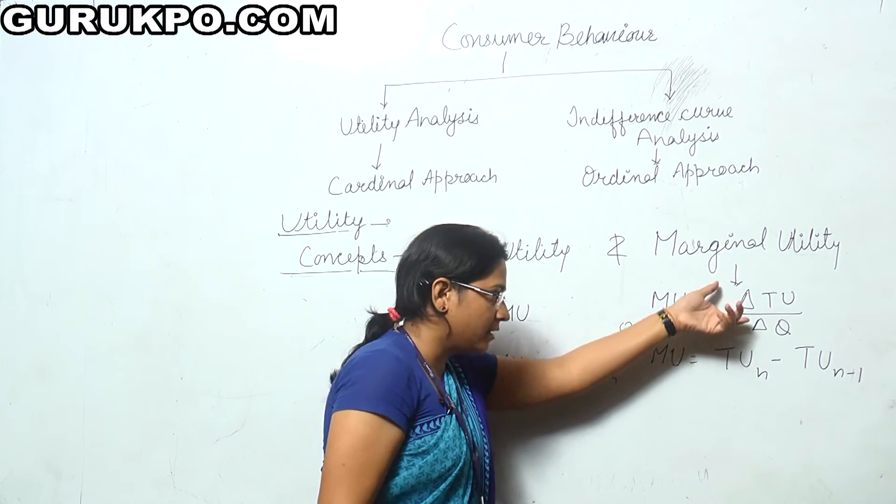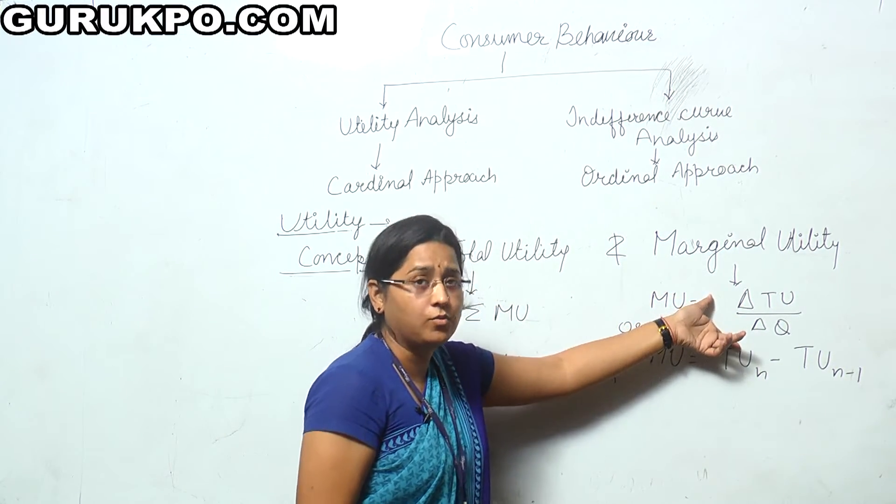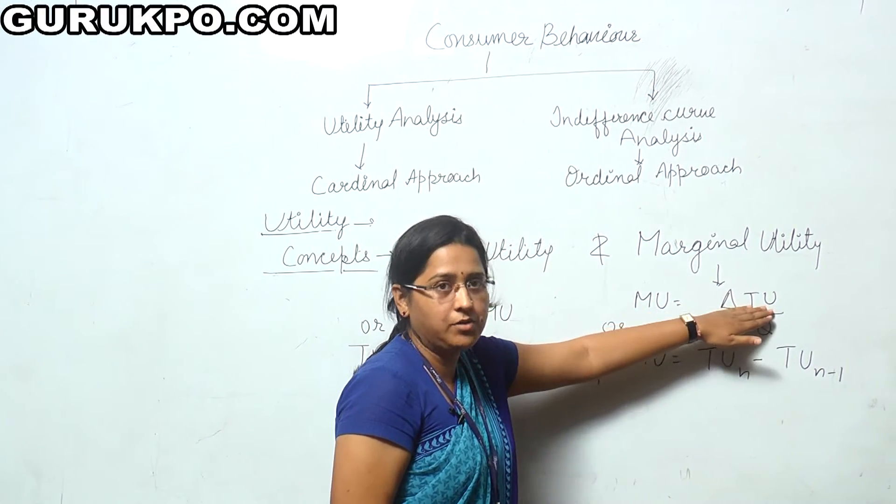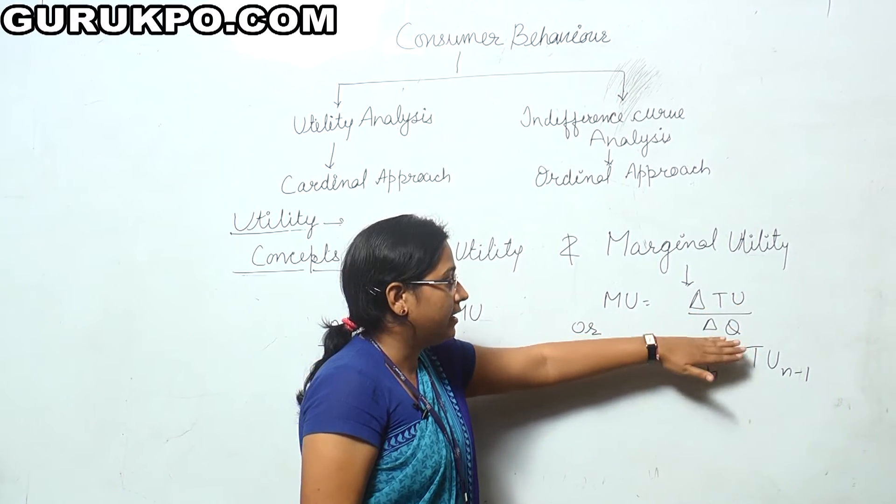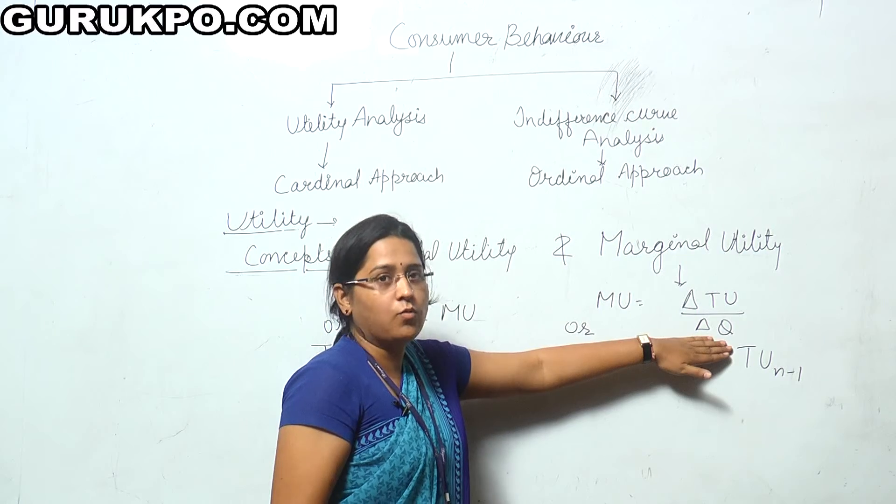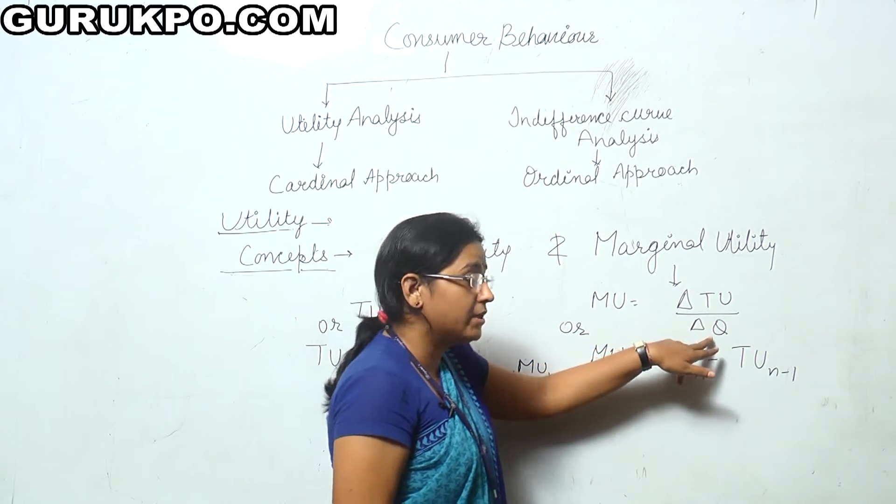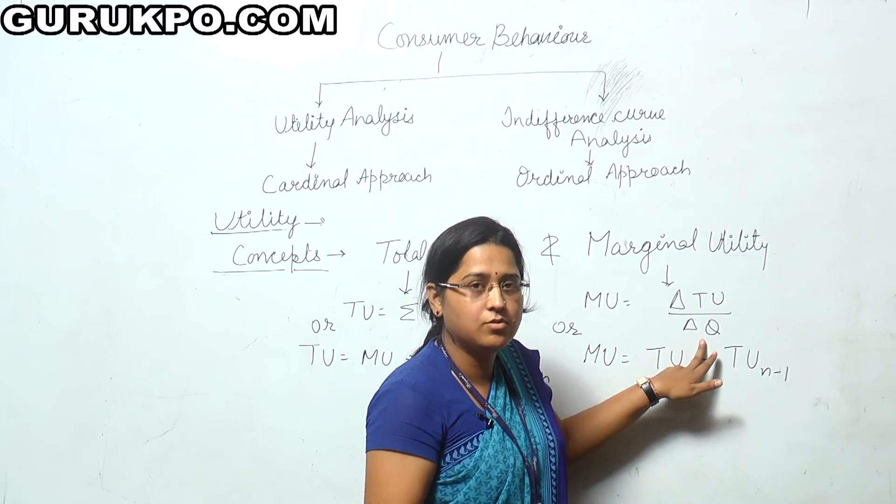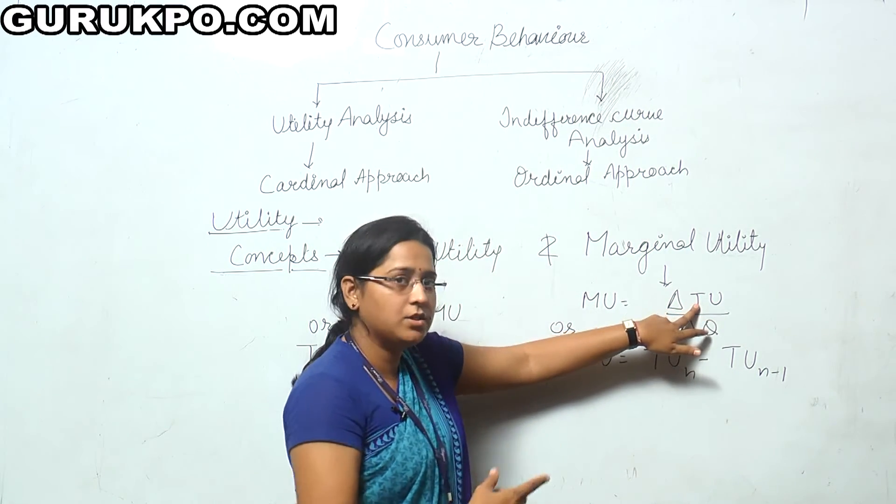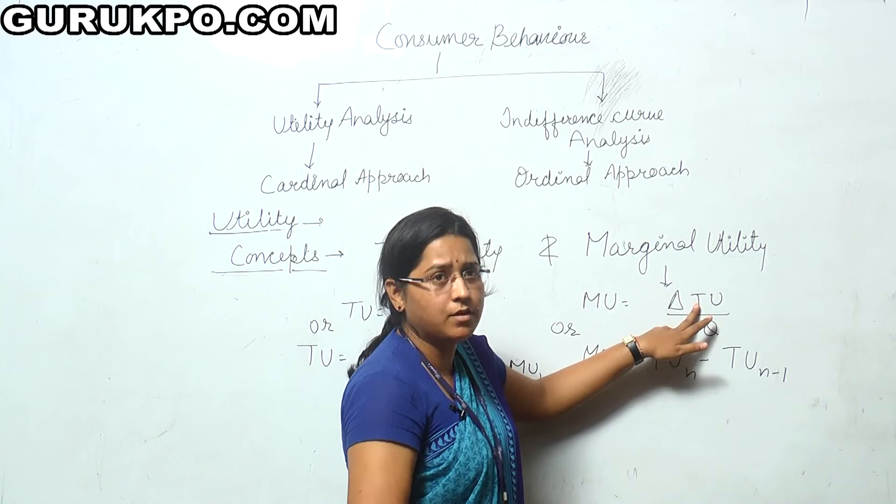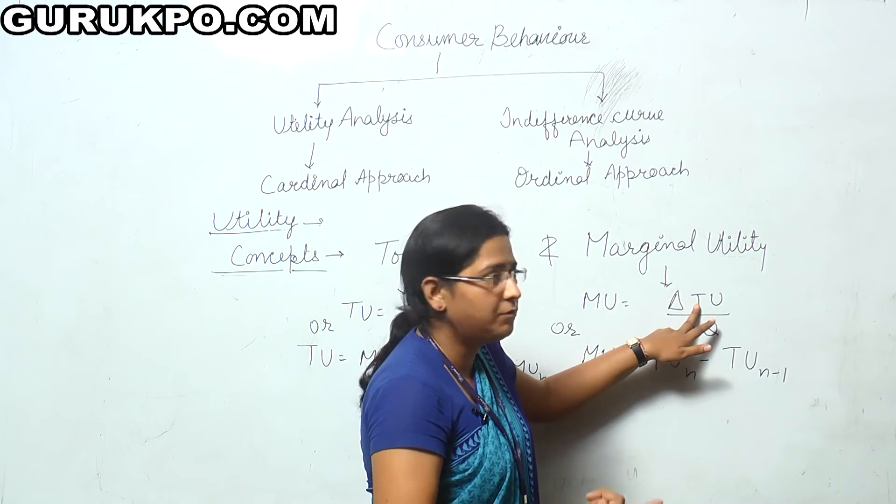That is delta TU upon delta Q. Now, delta TU stands for the change into the total utility that derived from the change into the quantity of a particular commodity. Delta Q is the change into the consumption of a particular commodity and delta TU is the change into the total utility that derives from that consumption of that particular commodity.